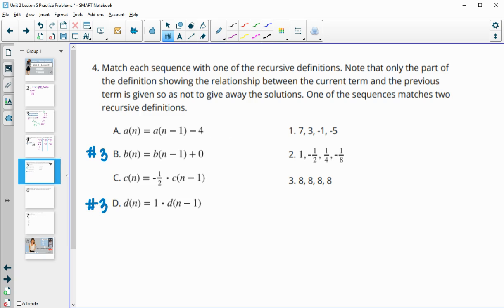Then A, we're subtracting 4. So let's take a look at this one. 7 minus 4 is 3, 3 minus 4 is negative 1, negative 1 minus 4 is negative 5. So this one goes with number 1.